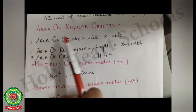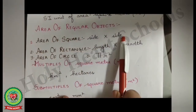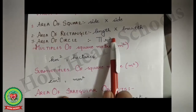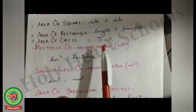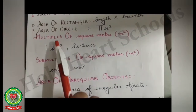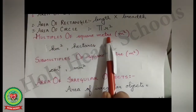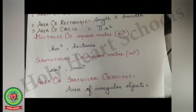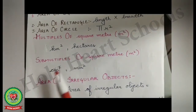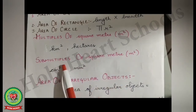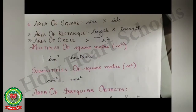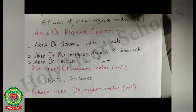Area of regular objects: the area of a square equals side multiplied by side (side²); area of a rectangle equals length multiplied by breadth; area of a circle equals pi r squared, where pi is 22/7 or 3.14. Multiples of square meter — that is, bigger units — are kilometer squared or hectares. Sub-multiples of square meter — smaller units — are centimeter squared or millimeter squared.